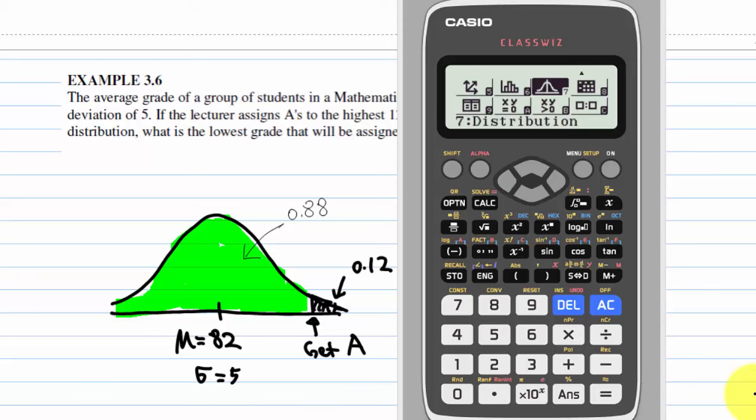We can use Casio ClassWiz to calculate the minimal score in order to get A. We go to menu, select 7 for distribution, then equal.